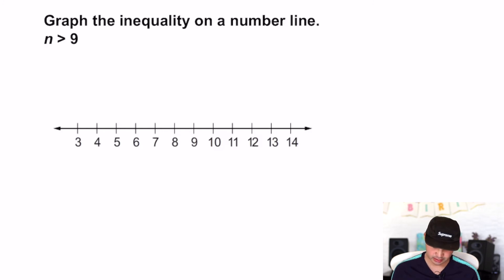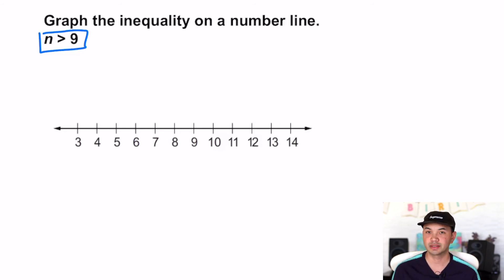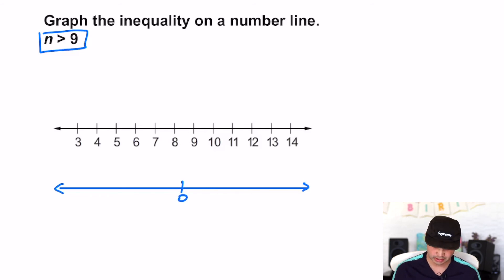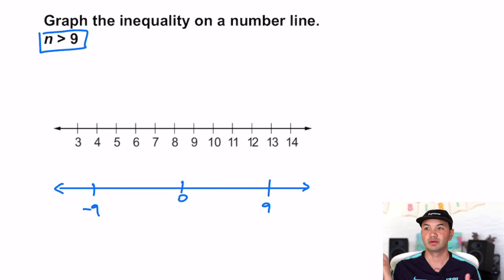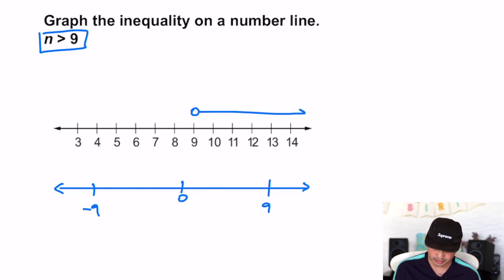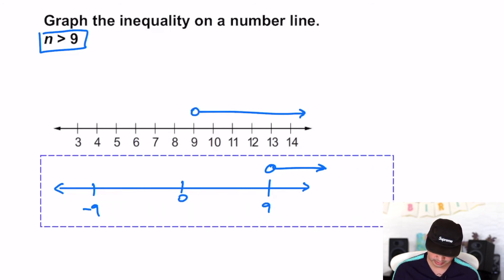Now graph the inequality n > 9 on a number line. I'll draw a number line — zero should be included; I don't need to put every number, I just need to know where zero is in relation to the value and that my line goes left to right. N is greater than nine, so we start at nine. It cannot be nine — it has to be greater than nine, so the number is to the right. It's an open circle going to the right.